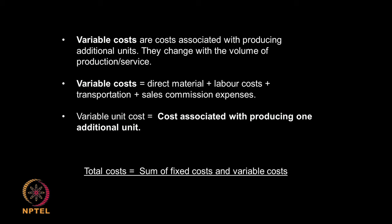Analogous to that we also have the variable cost. Variable cost will change or vary depending upon the volume of production. If I am making 100 tons per year I will have certain variable cost and if next year I make 120 tons I will have different variable cost, because the raw materials I will be buying will be more, transportation will be more, sales will be more, I may be using more electricity, more water, more utilities. So depending upon the amount I am going to make the cost also will vary — that is why it is called variable cost. So the total cost is the sum of the fixed cost and the variable cost.